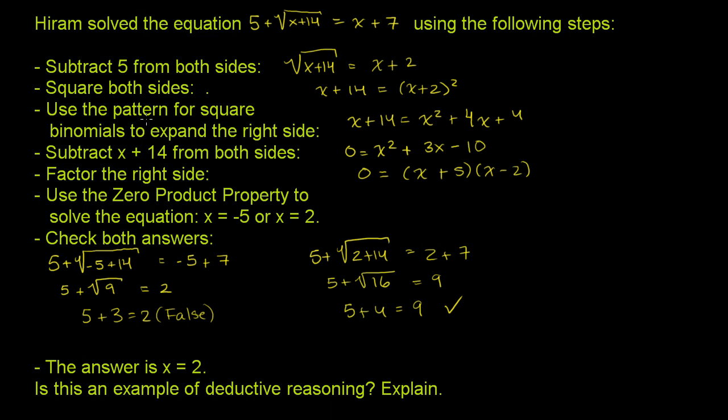And then he uses the pattern for square binomials to expand the right-hand side. So he just multiplied out x plus 2 times x plus 2 to get x squared plus 4x plus 4.